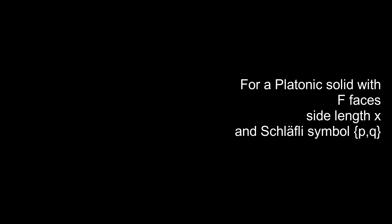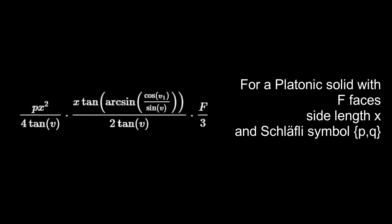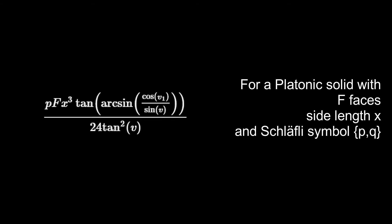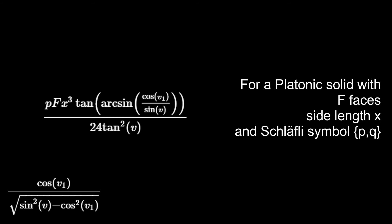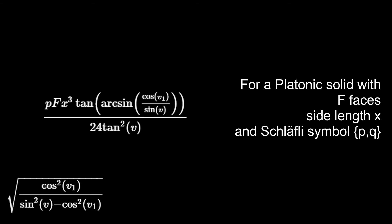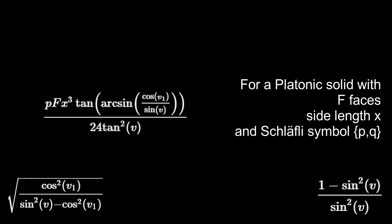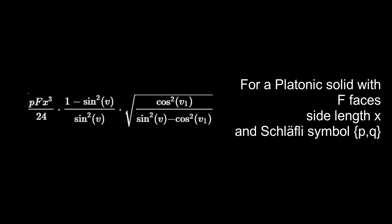So now we get the basic structure of the formula. For a platonic solid with F faces, side length X, and Schläfli symbol {P, Q}, we get this formula. Simplifying, and then simplifying tangent(arcsine(cosine V1 over sine V)) using the identity tangent(arcsine(k)) equals k over the square root of 1 minus k squared, we arrive at the final expression. The formula is: P times F times X cubed divided by 24, multiplied by (1 minus sine V squared) divided by sine V squared, multiplied by the square root of cosine V1 squared divided by (sine V squared minus cosine V1 squared).